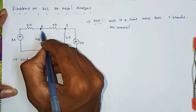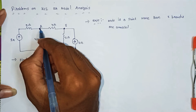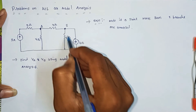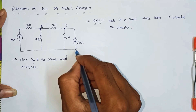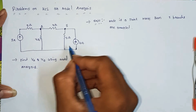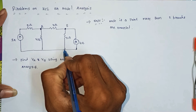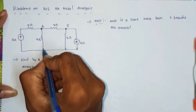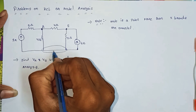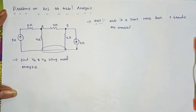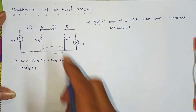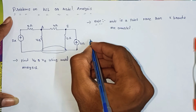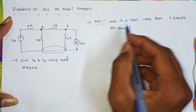Here we can see three branches connected, so this is node A. Next, this point also has three branches, so this is node B. This other point has only one branch, so it is not a node — it is a short circuit. These two short circuit points form the reference node, which is zero potential. So the reference point is zero.